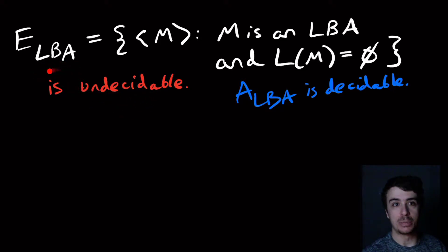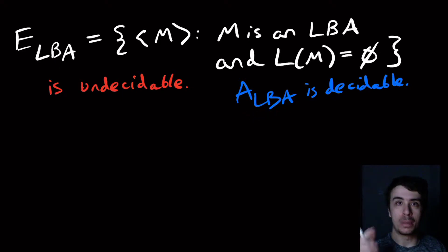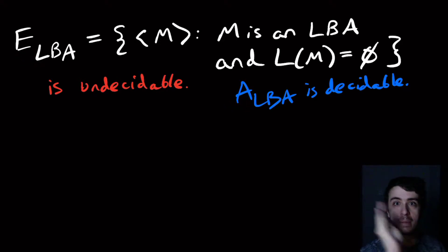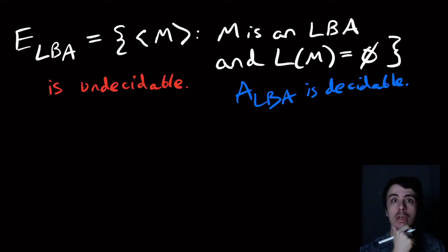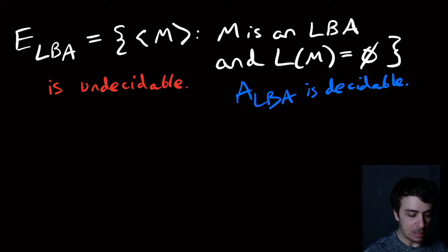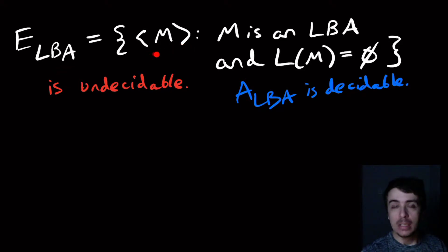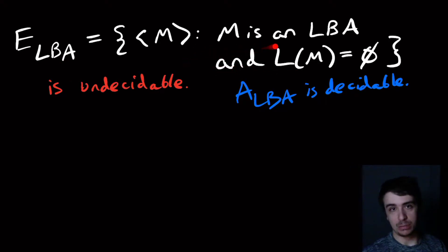This is in stark contrast to everything we saw before, where acceptance and emptiness were either both decidable or both undecidable. This is where the break happens. We'll show this is undecidable. We can't use Rice's theorem because Rice's theorem applies to Turing machines — if this were E_TM we could use it — but since this is LBA, we have to use something else.